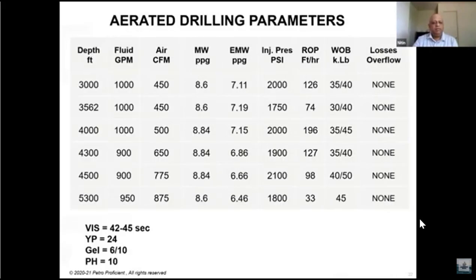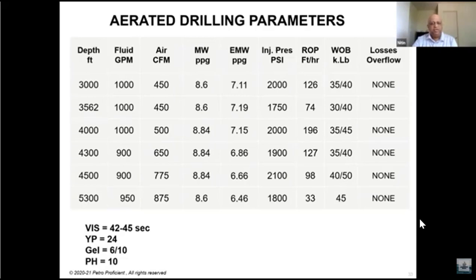Looking at this table, you can see how much lower equivalent mud weight is achievable. The flow rate in GPM and air in cubic feet per minute (CFM) are shown. As you increase air and reduce fluid rate, if you had been drilling just with mud you would have had an equivalent mud density of 8.6 to 8.8 ppg, but by adding air you were able to achieve 7 ppg equivalent mud weight. The injection pressure is around 2,000 psi — very much within range. You can achieve between 6 to 7 ppg equivalent mud weight using this technique, which can mitigate loss circulation.